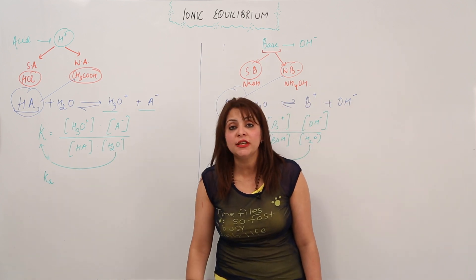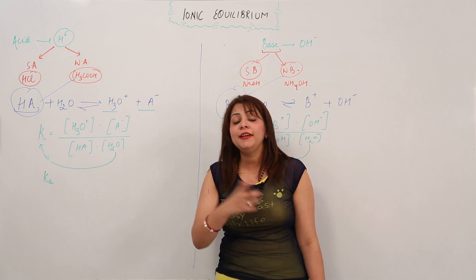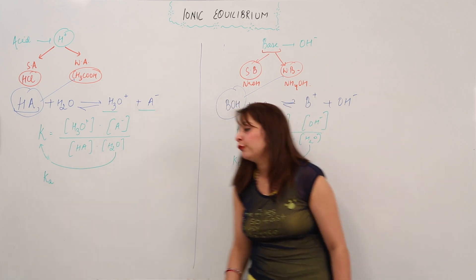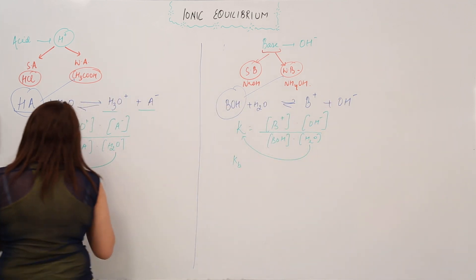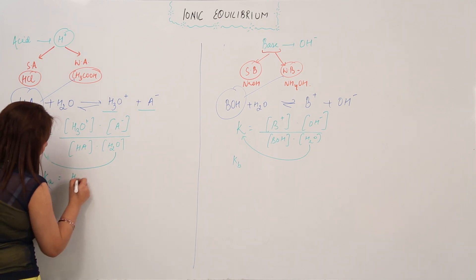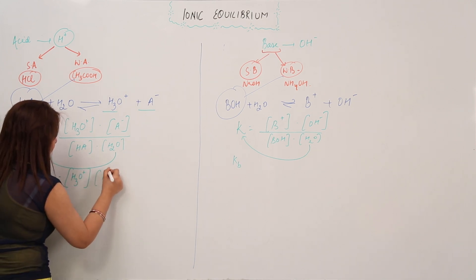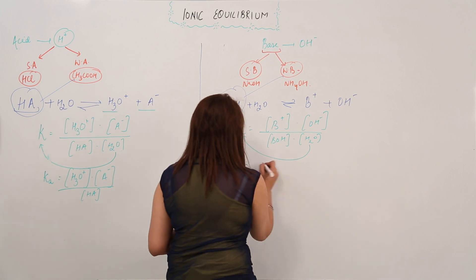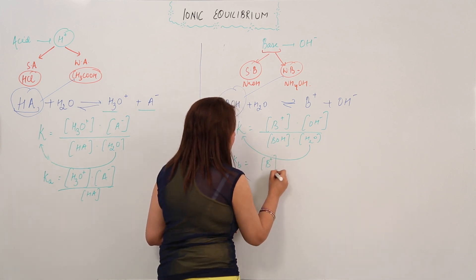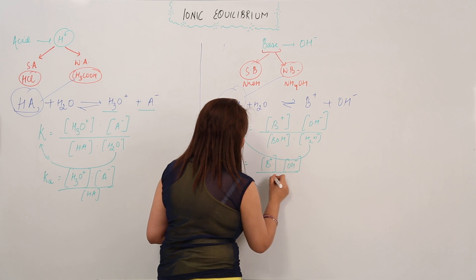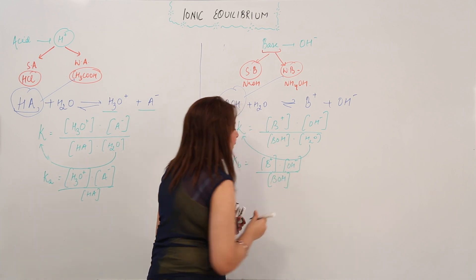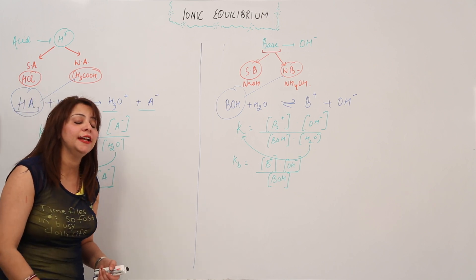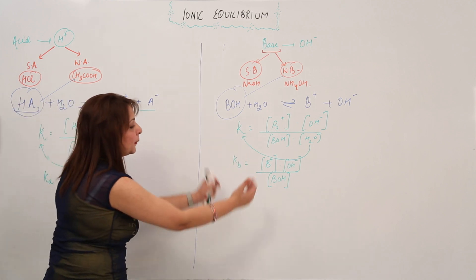K is an equilibrium constant — or ionization constant — because we are considering an ionic equilibrium. That is why I am using the term ionization constant for an acid and for a base. After multiplying, what we are left with is: Ka = [H₃O⁺][A⁻] / [HA], and Kb = [B⁺][OH⁻] / [BOH]. This is how you write the ionization constant expression for an acid and for a base.